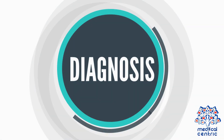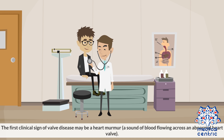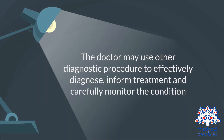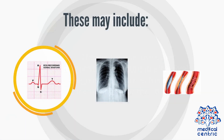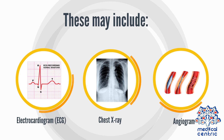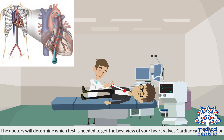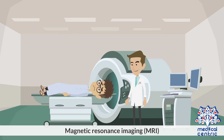Tricuspid valve disease may be detected by the doctor during a routine medical exam. The first clinical sign of valve disease may be a heart murmur — a sound of blood flowing across an abnormal heart valve. The doctor may use other diagnostic procedures to effectively diagnose, inform treatment, and carefully monitor the condition. These may include electrocardiogram or ECG, chest x-ray, angiogram, and echocardiogram. There are two types of echocardiograms: transthoracic echocardiogram or TTE, and transesophageal echocardiogram or TEE. The doctors will determine which test is needed to get the best view of your heart valves. Additional tools include cardiac catheterization, magnetic resonance imaging or MRI, and stress testing.